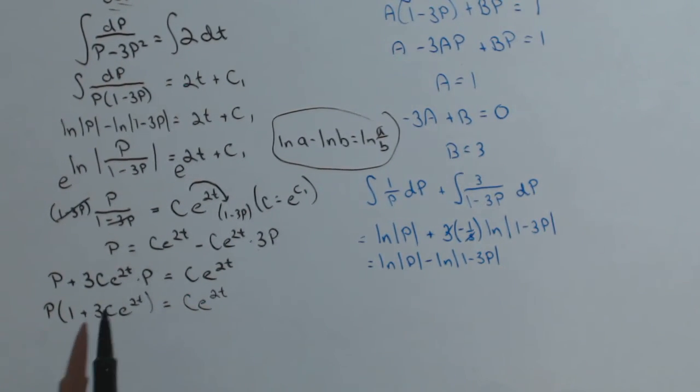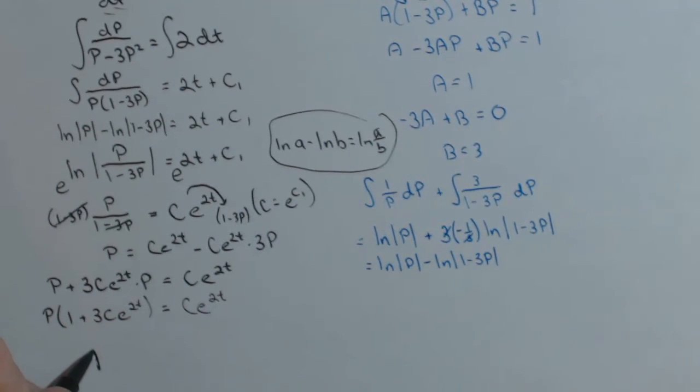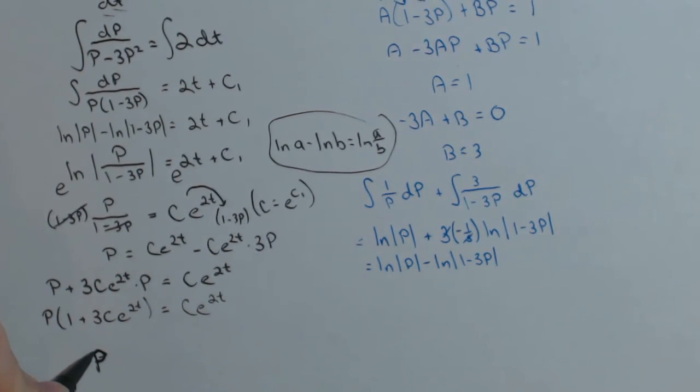And our last step is to divide. We're going to end up with a final general solution of p equals ce to the 2t over 1 plus 3ce to the 2t. And we're done.